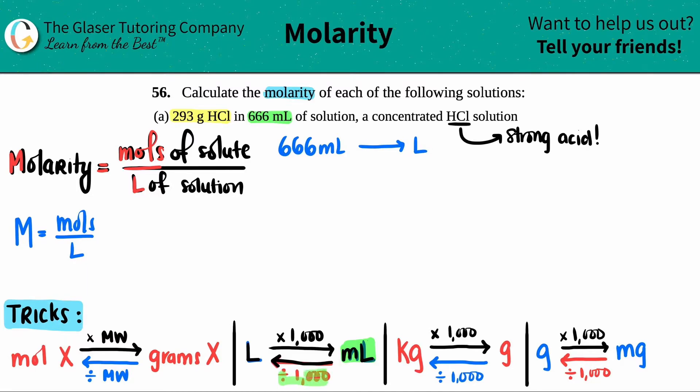It doesn't really matter which one you do. We'll do 666 divided by a thousand, and that should come out 0.666 liters. I know the bottom number, 0.666 liters.